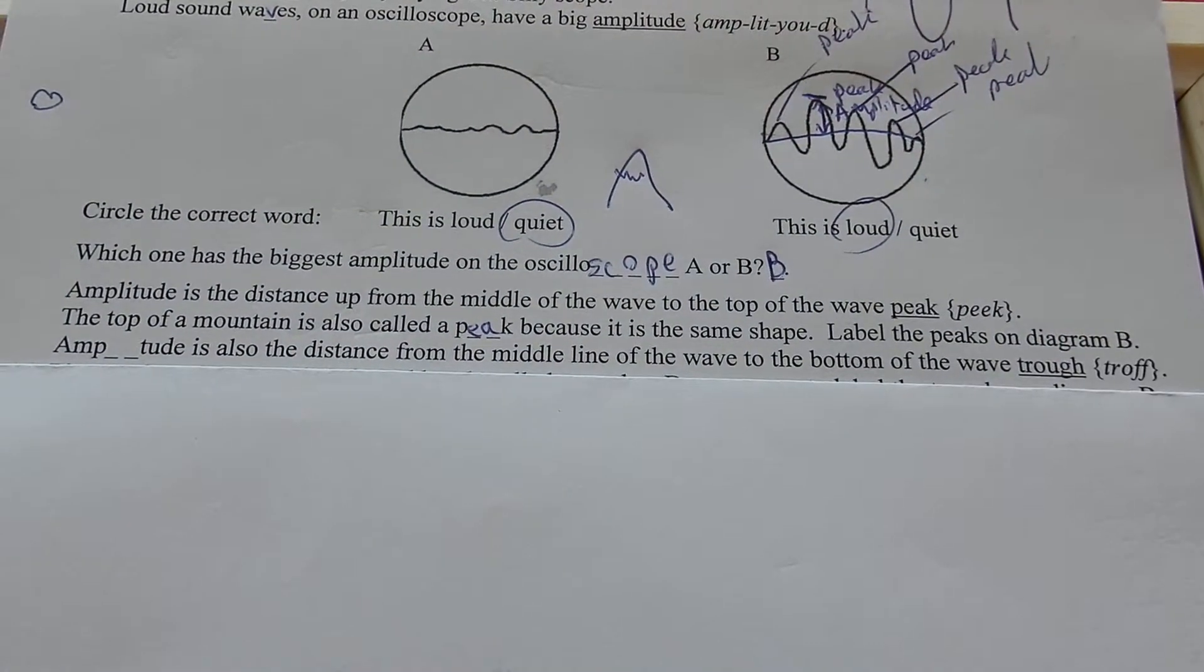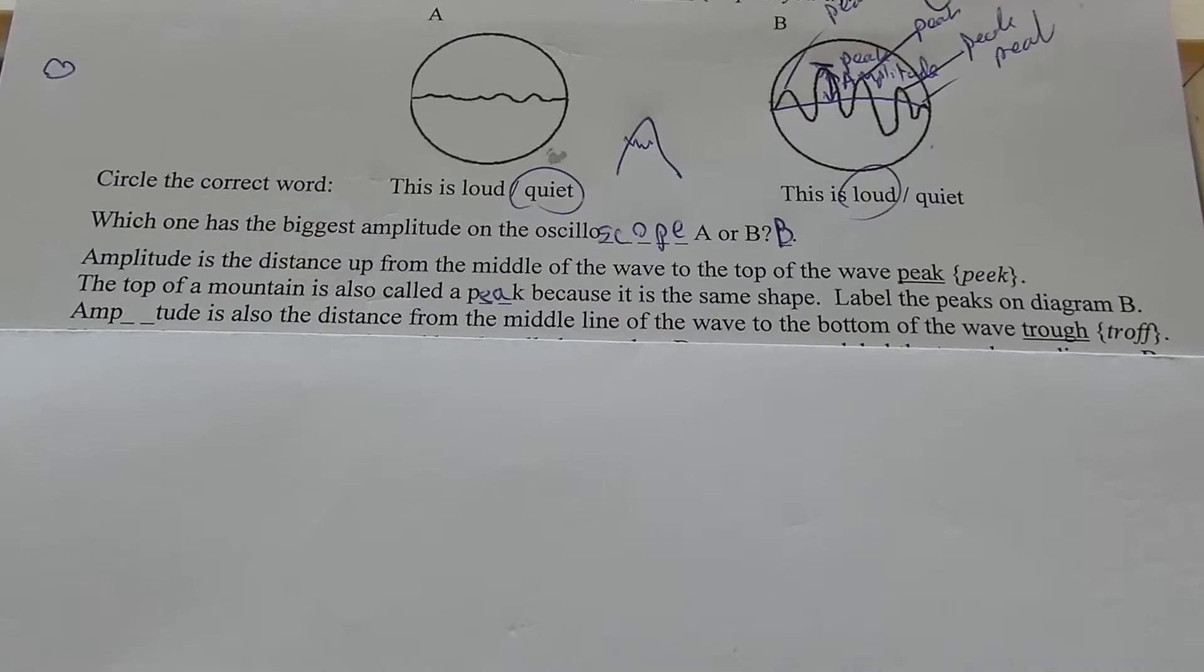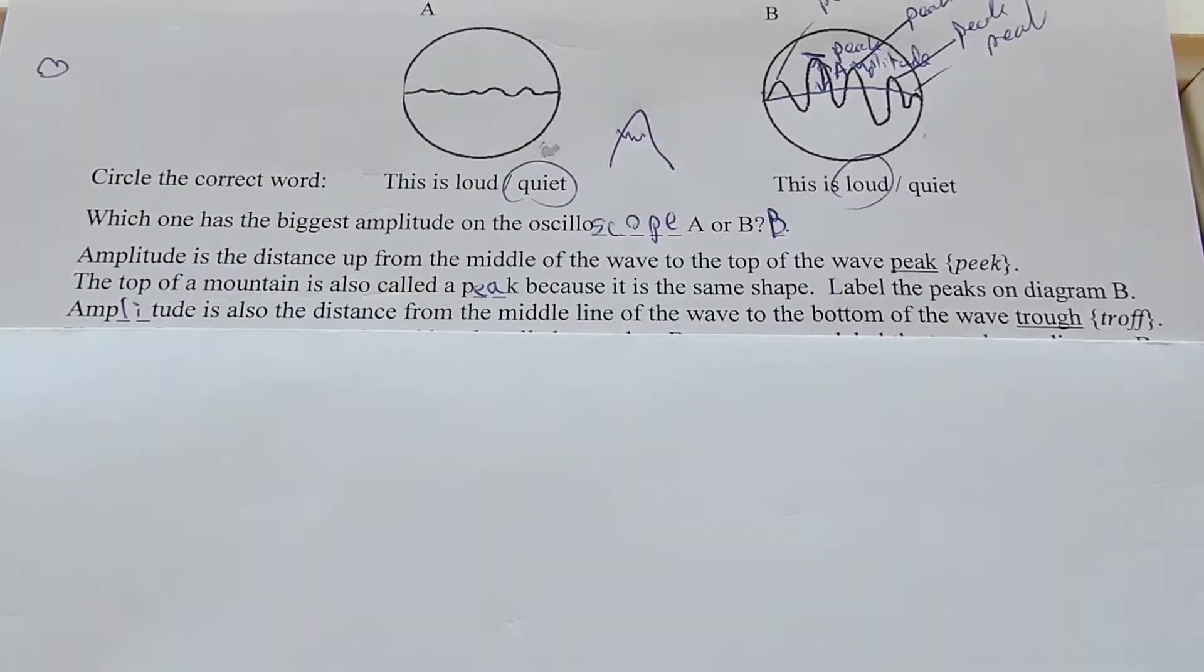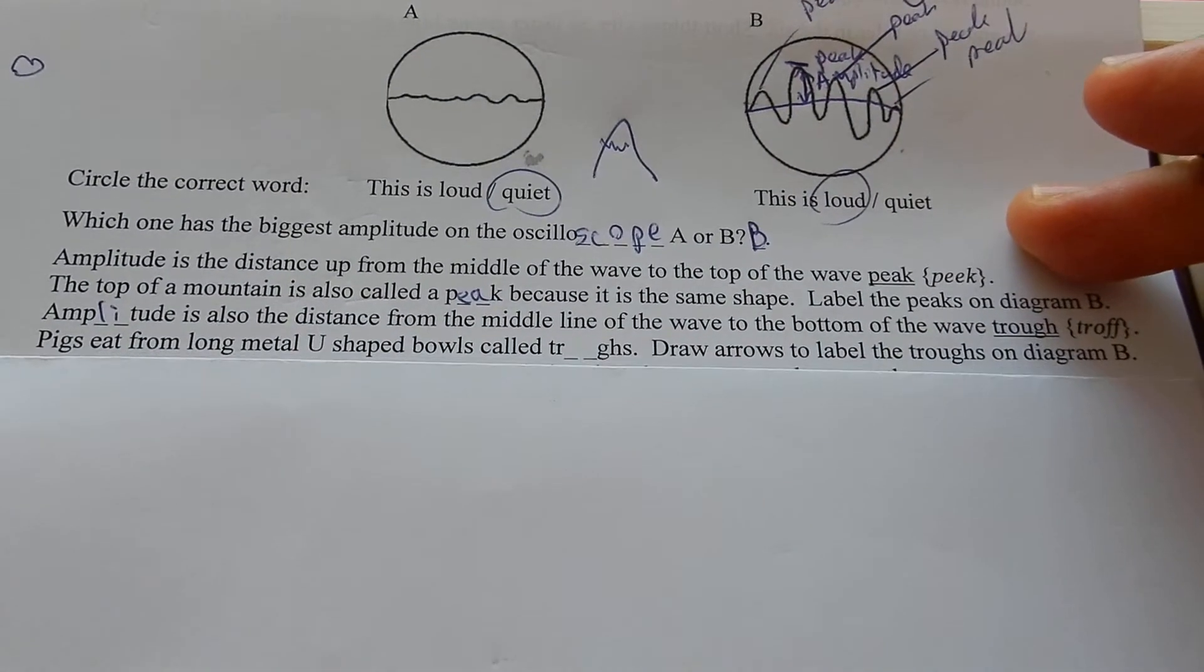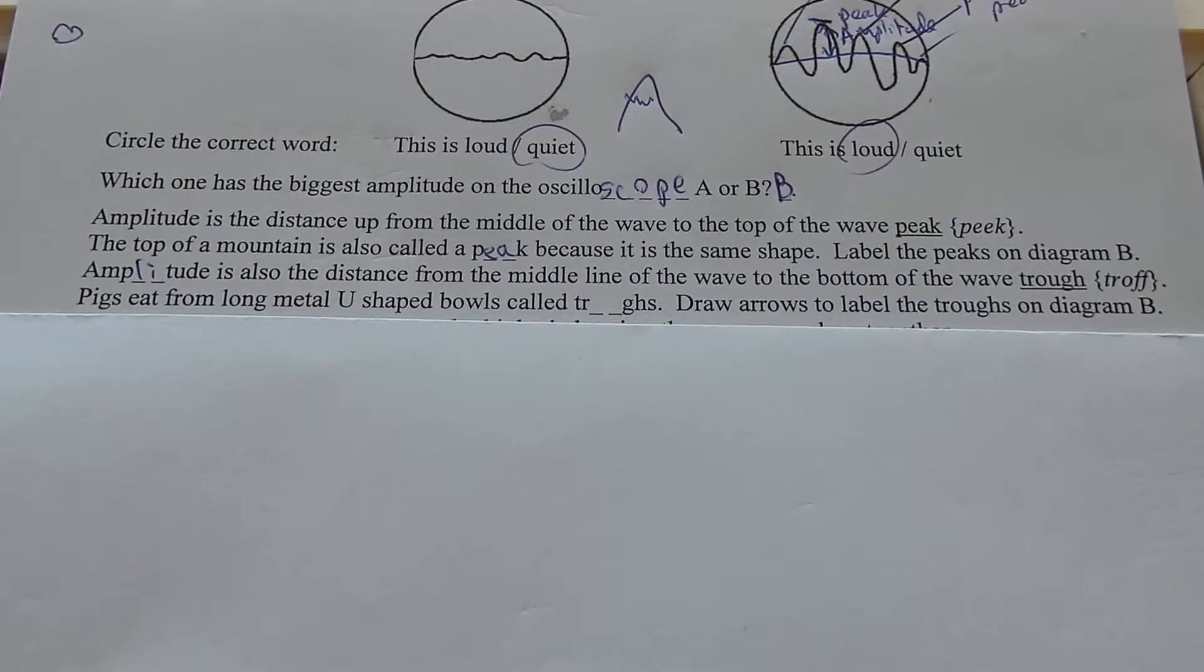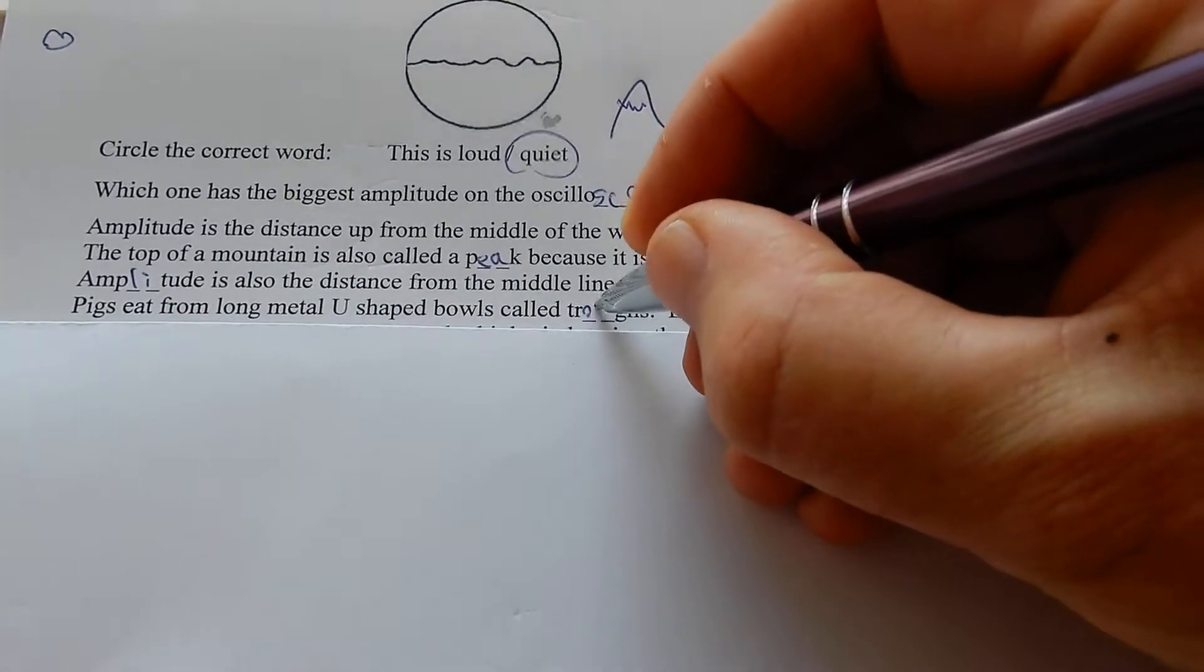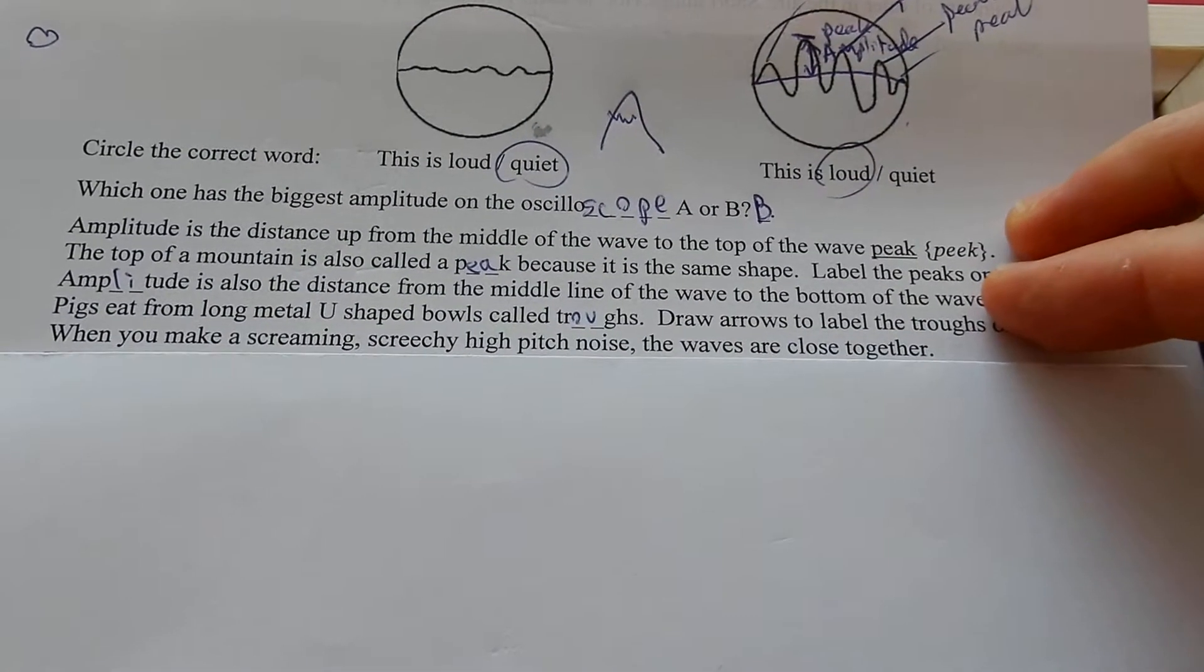Amplitude is also the distance from the middle line of the wave to the bottom of the wave, the trough. Pigs eat from long metal u-shaped bowls called troughs.